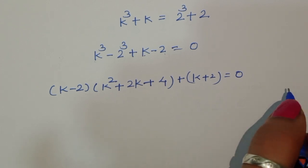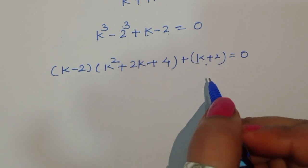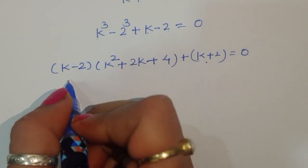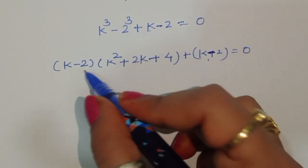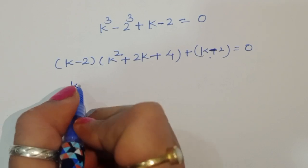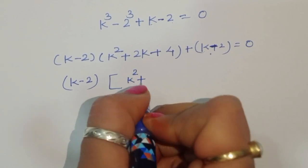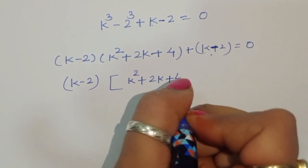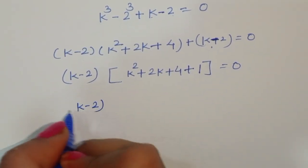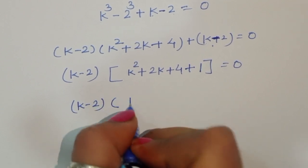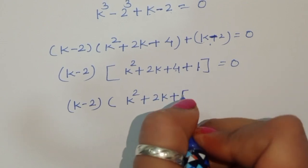We have (k minus 2)(k squared plus 2k plus 4) plus (k minus 2) equals 0. We can take (k minus 2) as a common factor. So: (k minus 2)(k squared plus 2k plus 4 plus 1) equals 0, which simplifies to (k minus 2)(k squared plus 2k plus 5) equals 0.